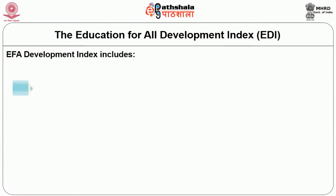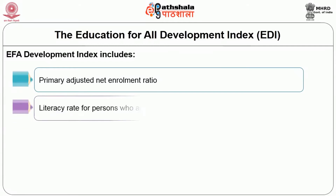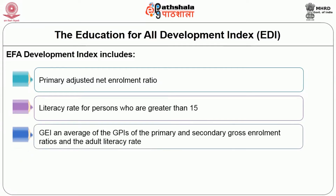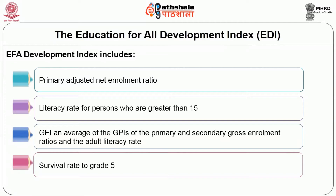The EDI includes the primary adjusted net enrollment ratio — the number of pupils in the school age group for primary education enrolled in either primary or secondary education, expressed as a percentage of the total population in that age group. Secondly, the literacy rate for persons below 15. Thirdly, the gender-specific EFA index, GEI — an average of the gender parity indices of primary and secondary gross enrollment ratios, the adult literacy rate, and the survival rate to grade 5.